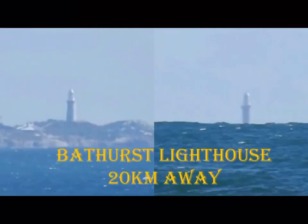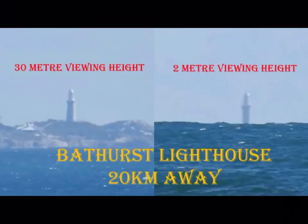This is Bathurst lighthouse from 20 kilometres away. The left image is from a 30 metre viewing height and the right image from a 2 metre viewing height. The obstruction in the right image the globe opponents will assert is only from earth curvature and nothing else. But I've shown you in this video the angular resolution can cause obstruction from bottom up without the need of any earth curvature.